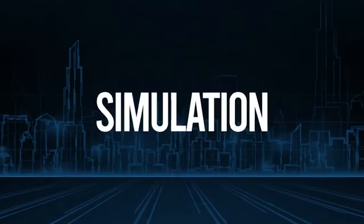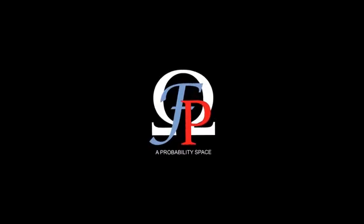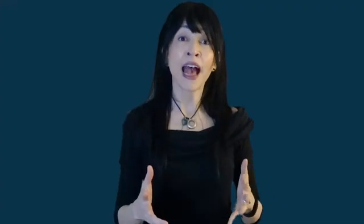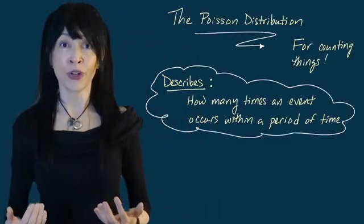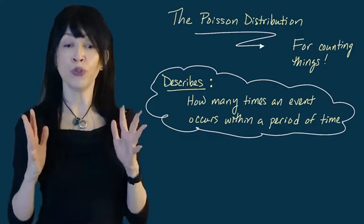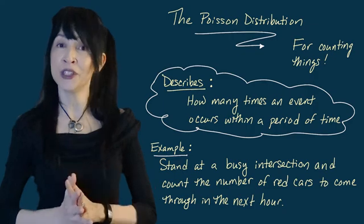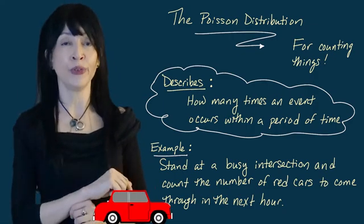It's a really good distribution for counting things. In fact, it often describes the number of times that an event occurs in a particular period of time. For example, suppose you stand at a busy intersection for one hour and you count the number of red cars you see go by.